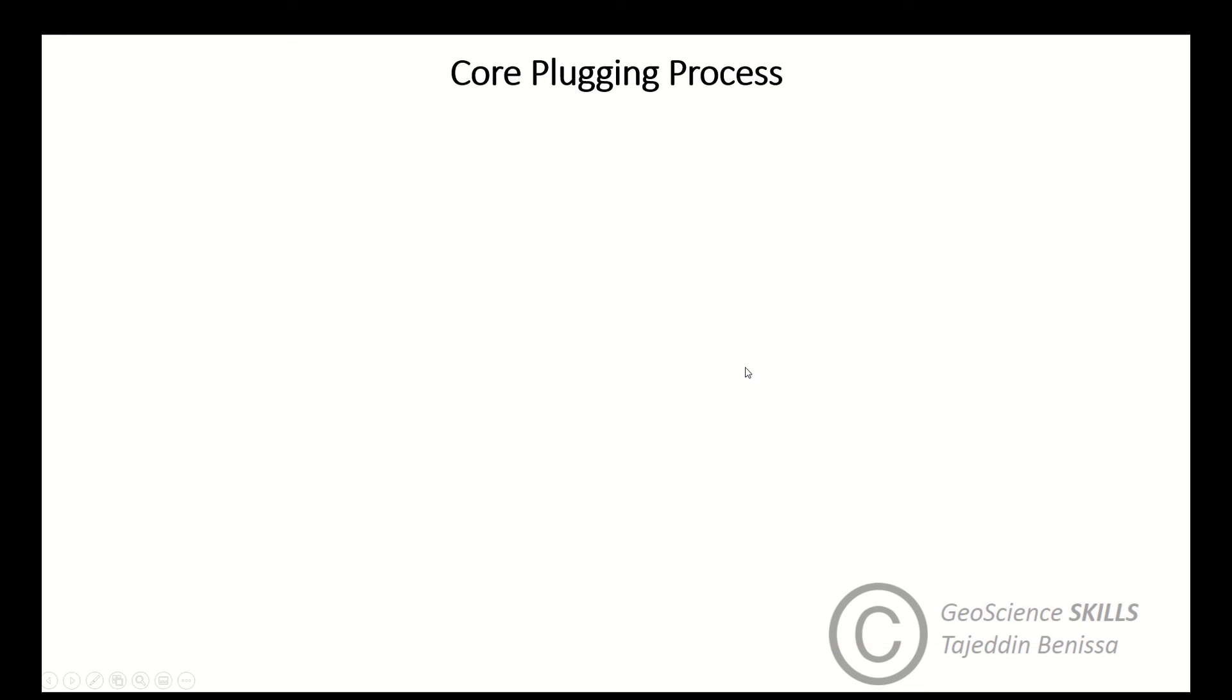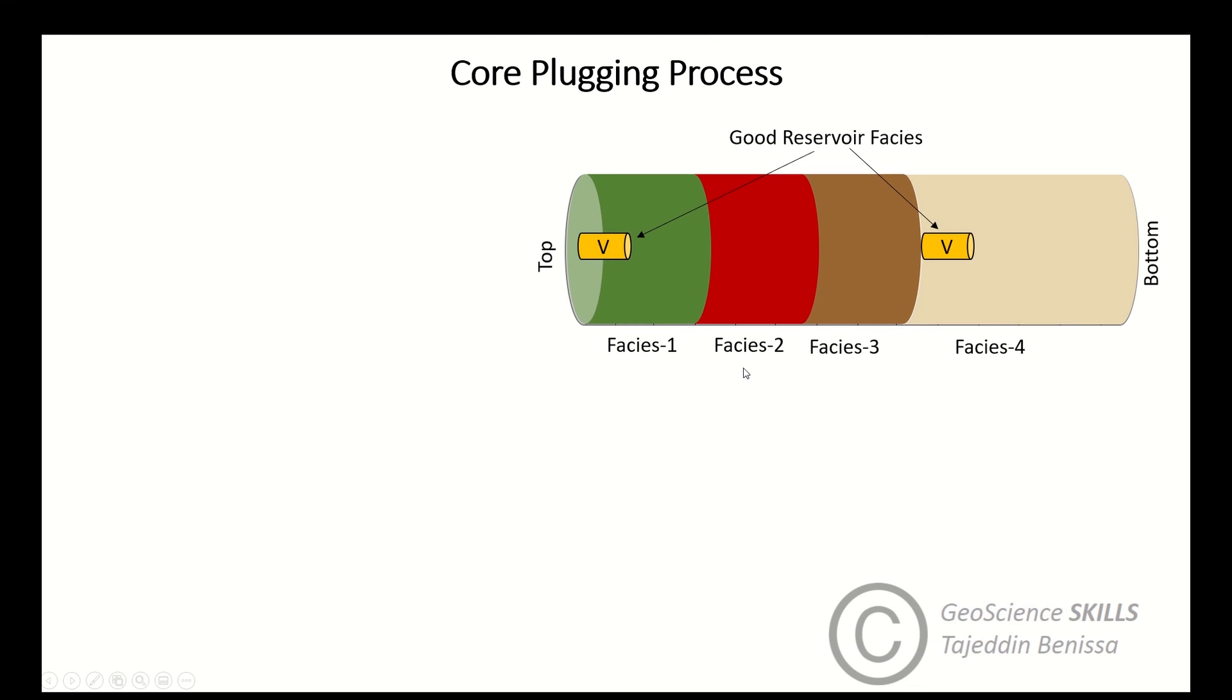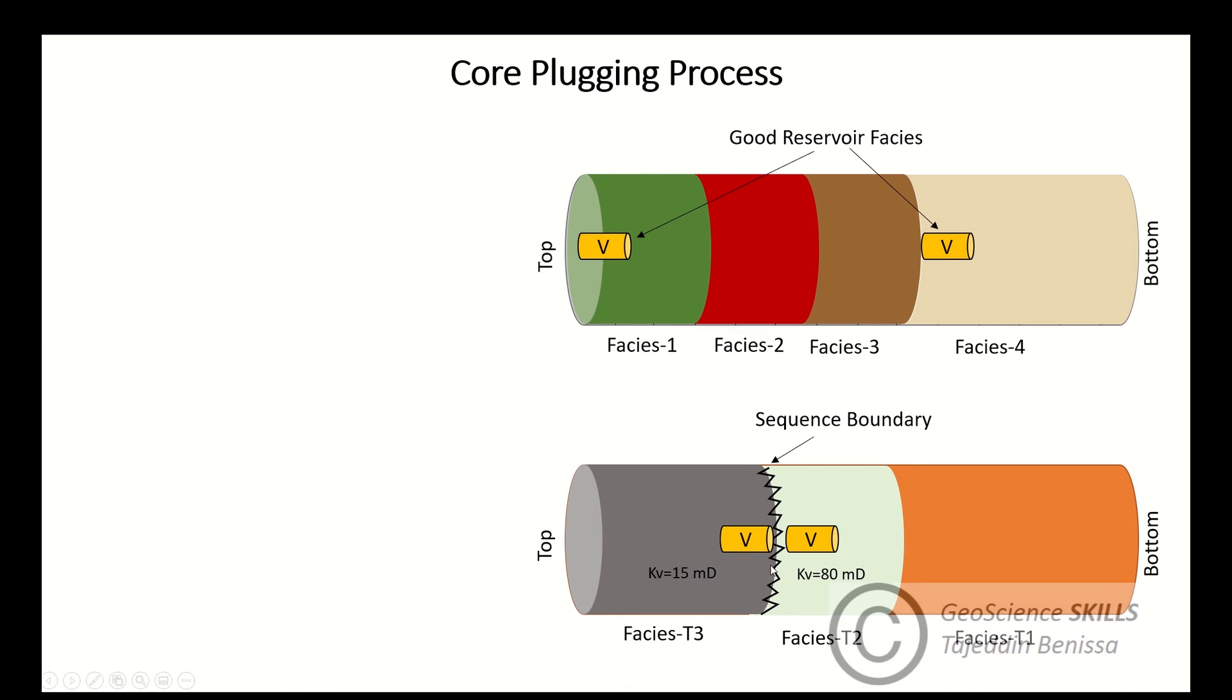For conventional core analysis, vertical plug allocation is preferred at good reservoir facies, facies sharp contacts, and above and below sequence boundaries. As you can see here in this example of a sketched core sample, the vertical plugs are taken at good reservoir facies or at the sharp contact between facies, or at sequence boundaries below and above the sequence boundary.